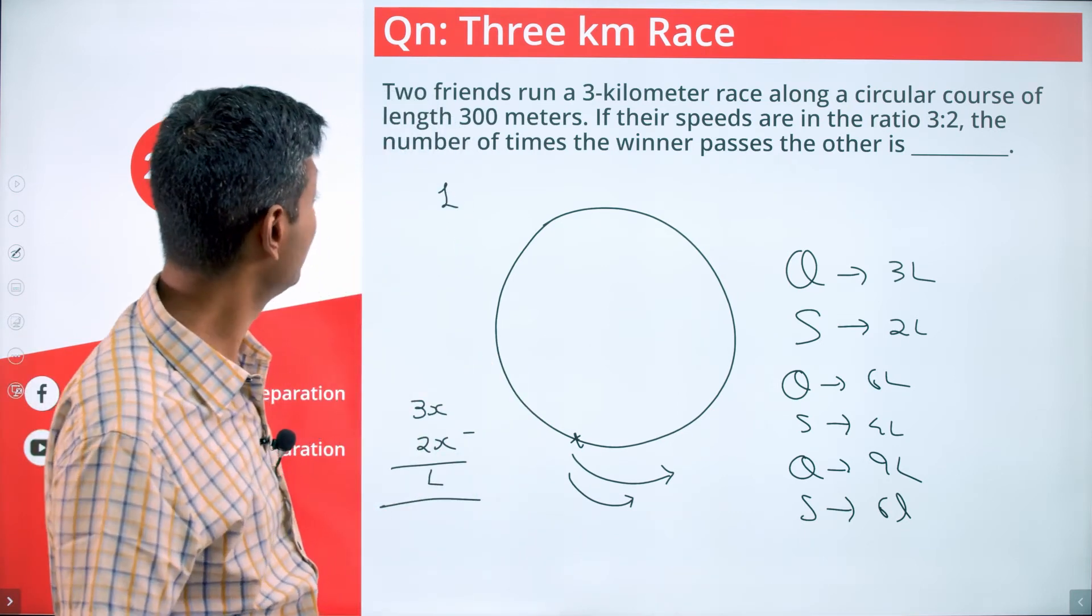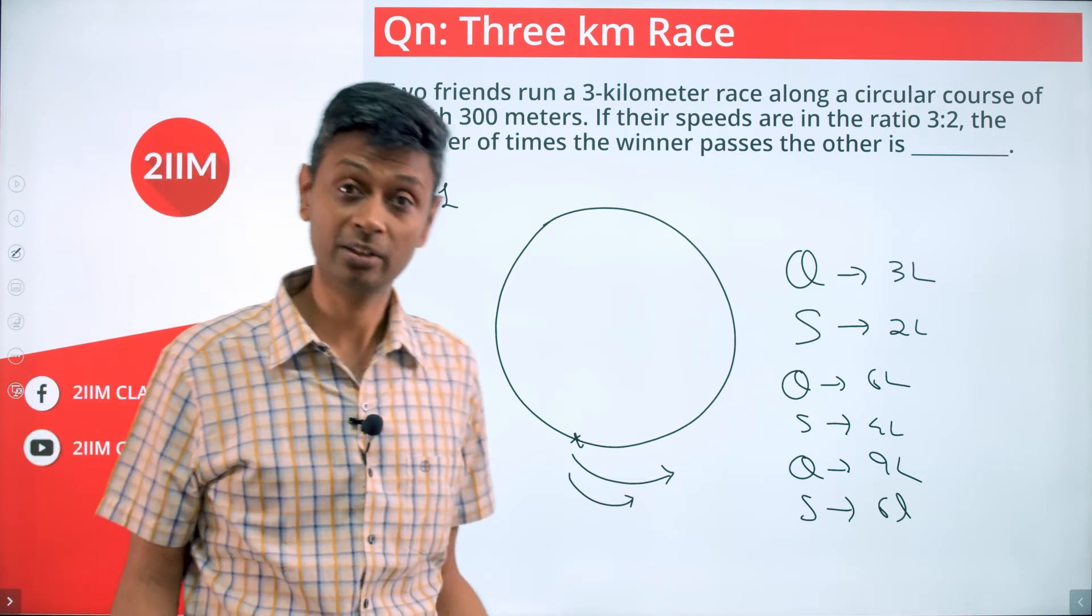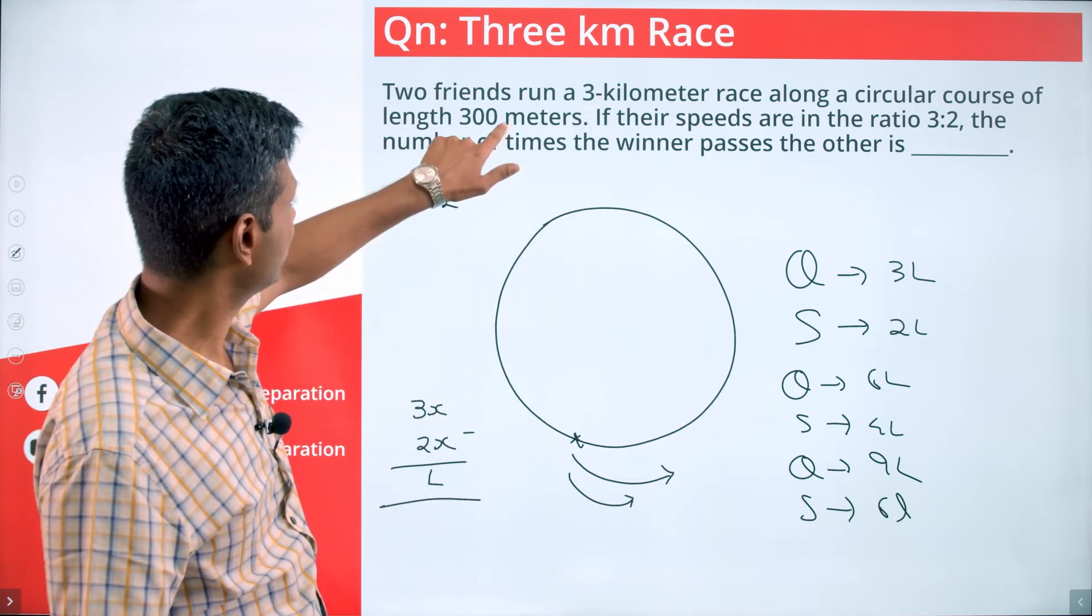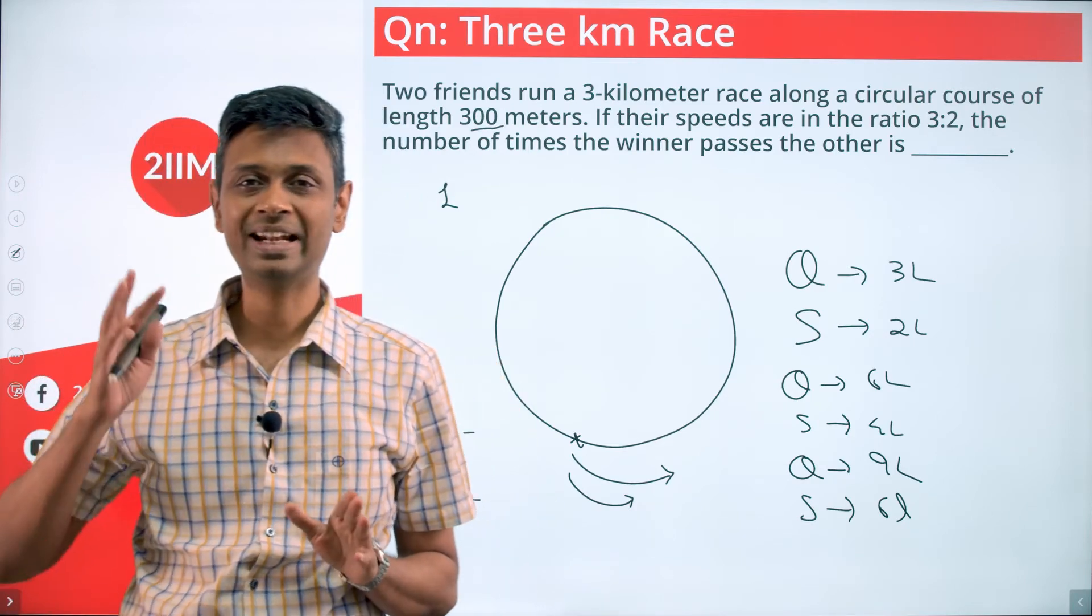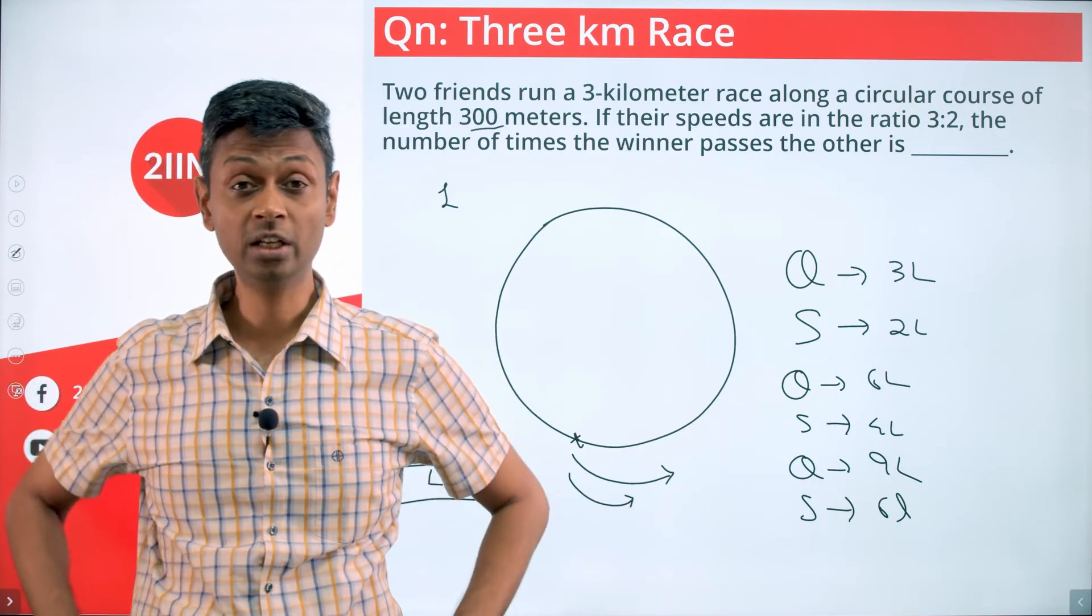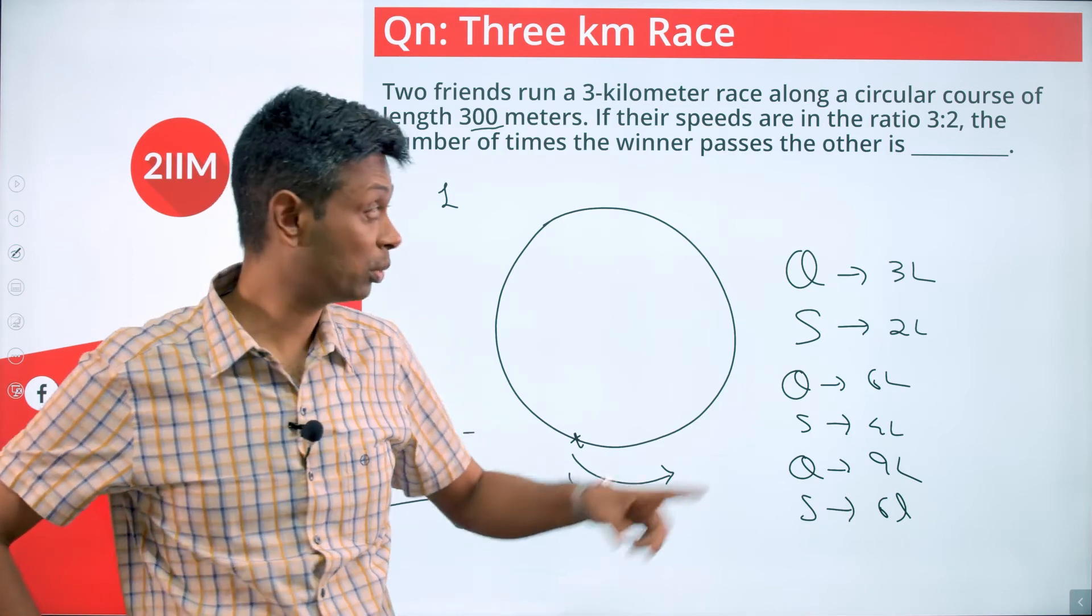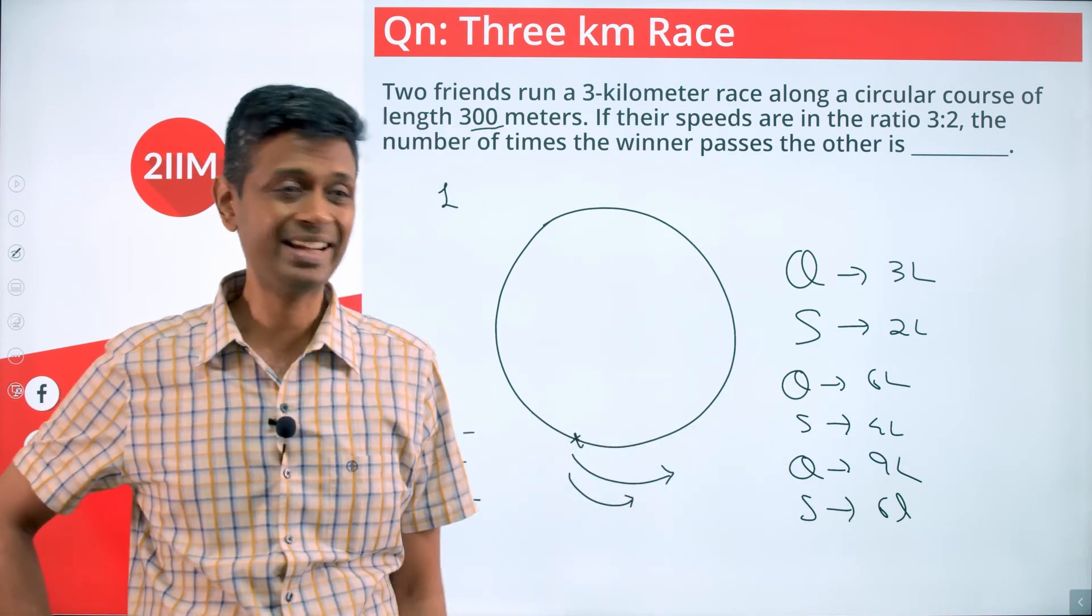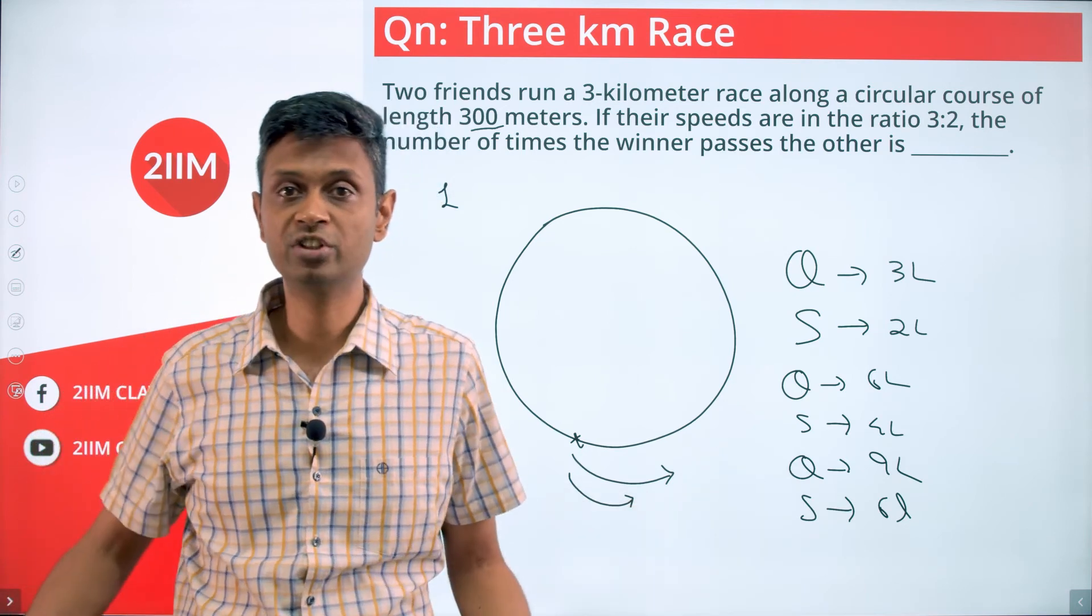Now we are asked how many times has the winner passed the other, and that depends on how many laps there are. So 3km race, lap length is 300m - it's a race of 10 laps. The quicker guy, when he finishes 3 laps, he'll be overtaking him. When he finishes 6 laps, he'll be overtaking him. When he finishes 9 laps, he'll be overtaking him, and then he finishes the race.